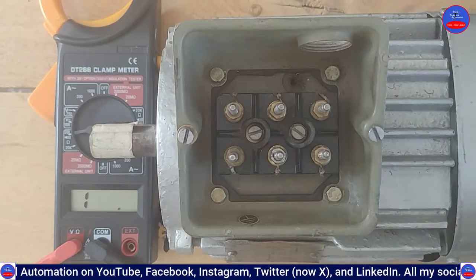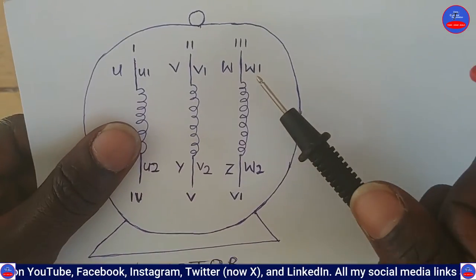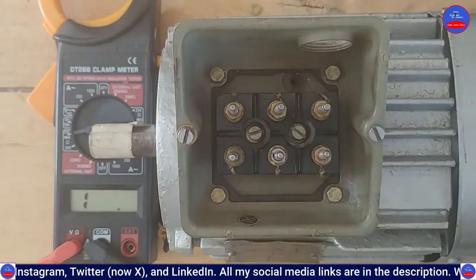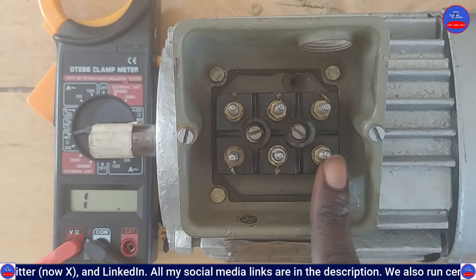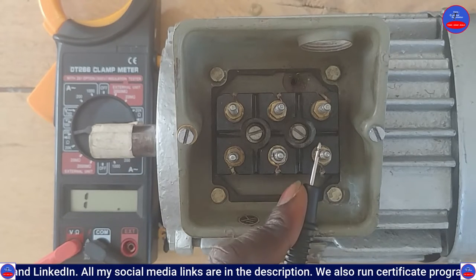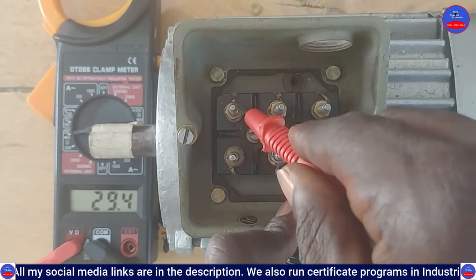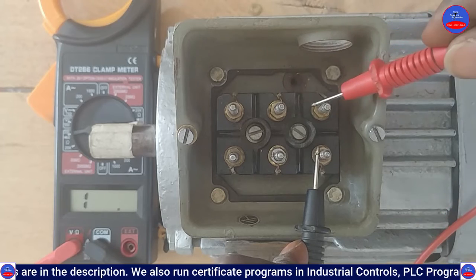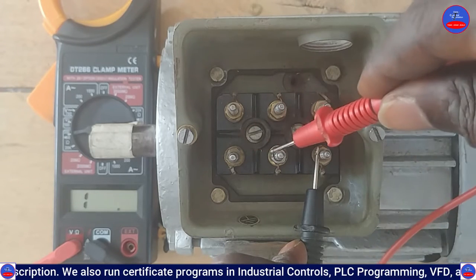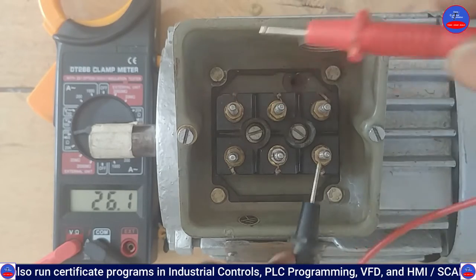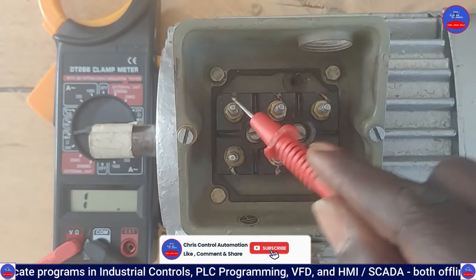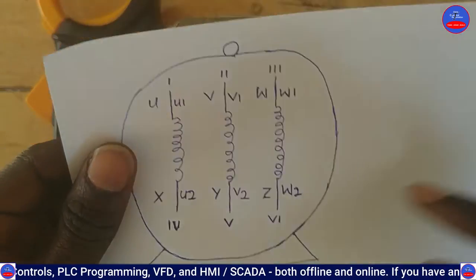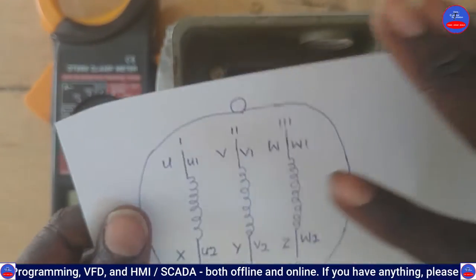Now let's test W1 and W2 — that is winding three. This is my W1. Let's put the lead here and start. There is a reading here. No reading... no reading... no reading... but there's a reading here. So this is automatically my W2. W1 and W2 confirmed.